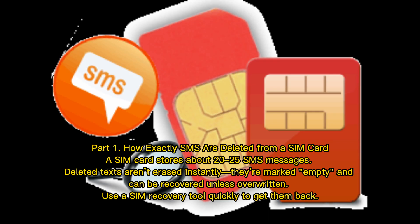Part one: how exactly are SMS deleted from a SIM card? A SIM card stores about 20 to 25 SMS messages. Deleted texts aren't erased instantly — they're marked empty and can be recovered unless overwritten. Use a SIM recovery tool quickly to get them back.